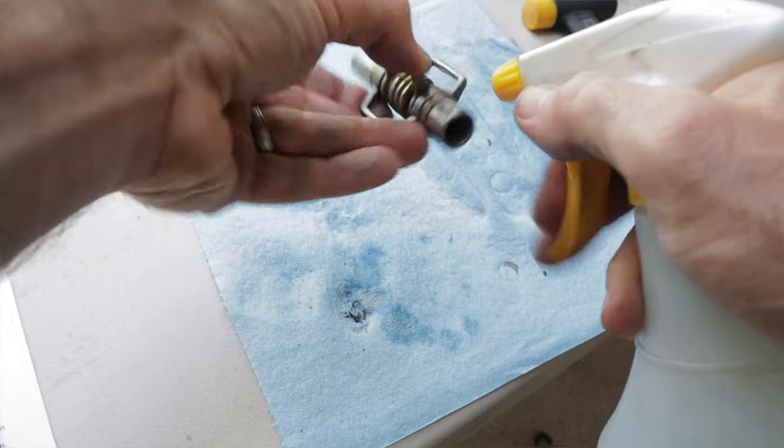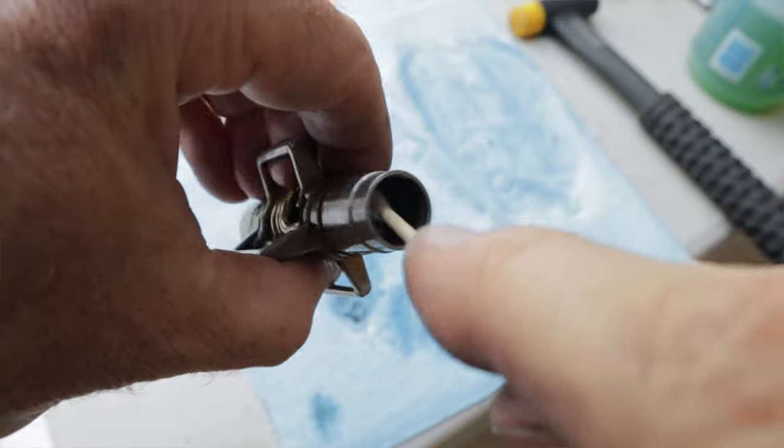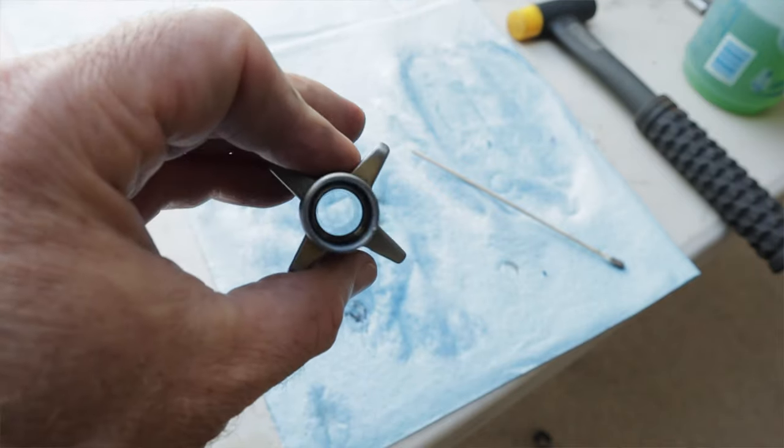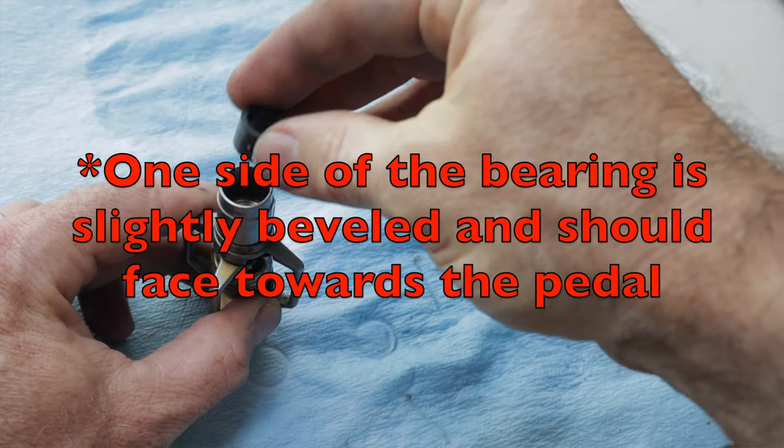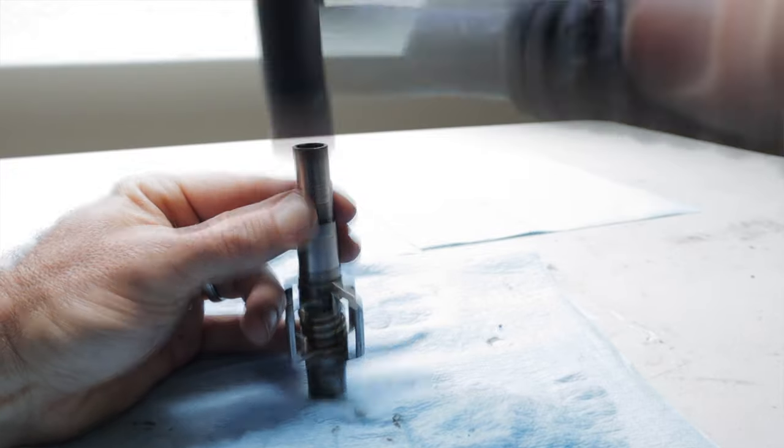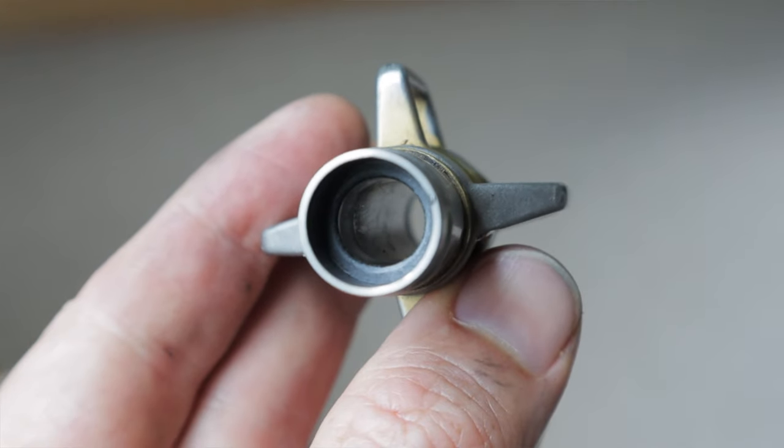I also take this time to spray some degreaser in the pedal body and wipe out the grime with q-tips and paper towels. Once it's all clean and dry, we can install the new Aegis glide bearing. Line up the bearing on the pedal body and make sure it's nice and straight. Then use a 10mm socket and your hammer to tap it in. It should fit nice and flush.